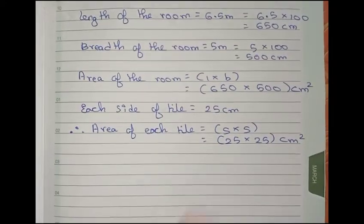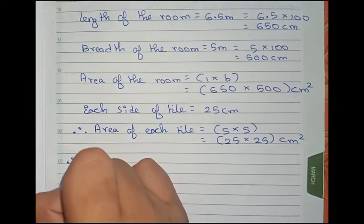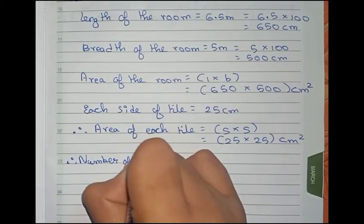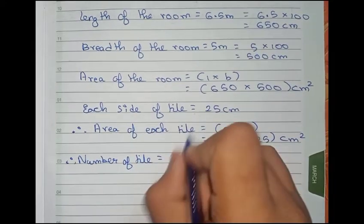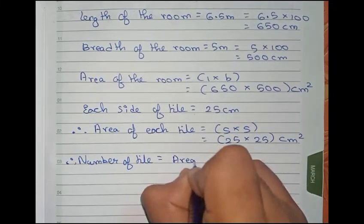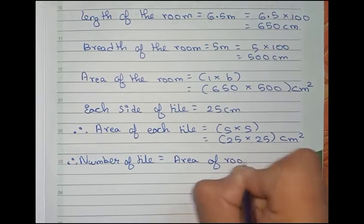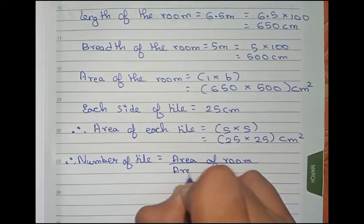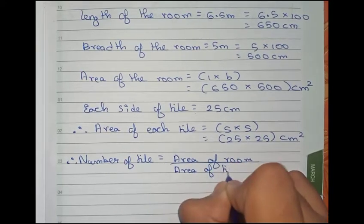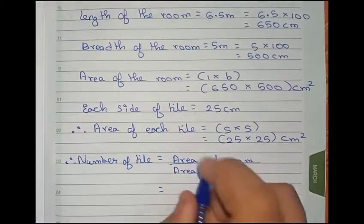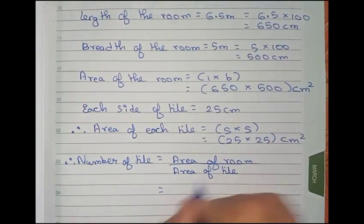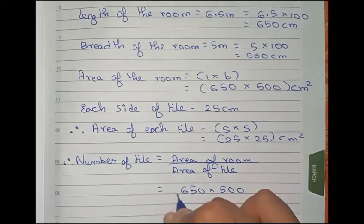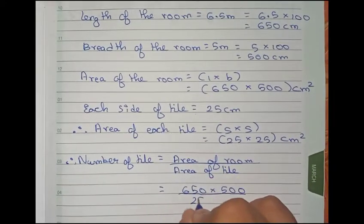Now find the number of tiles. Therefore, number of tiles is equal to area of room by area of tile. So area of room is 650 into 500 by the area of the tile, which is 25 into 25.